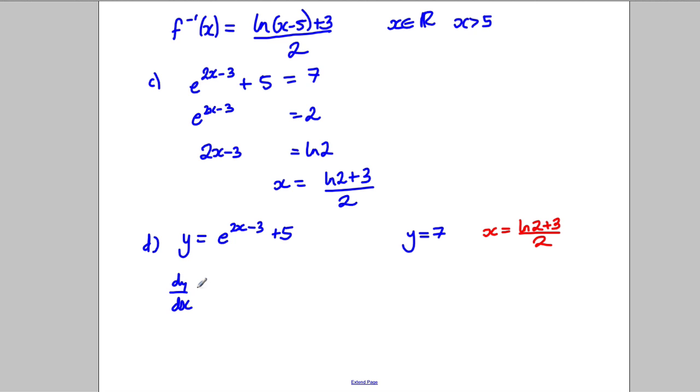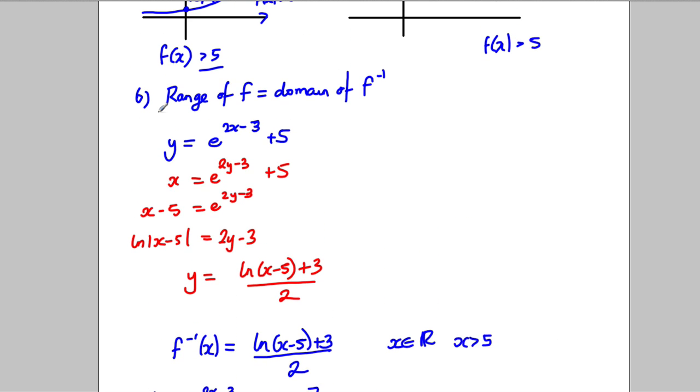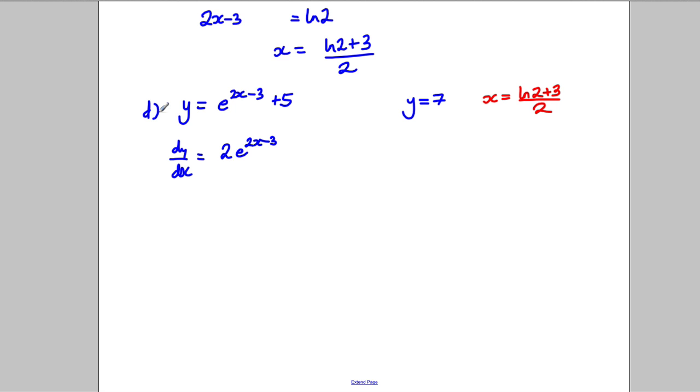dy by dx is equal to, you differentiate the exponent, which would be 2e to the 2x subtract 3, and you differentiate 5 and it just disappears. Now we want to work out the gradient of, let's have a look here again, the gradient of the tangent when y is 7.